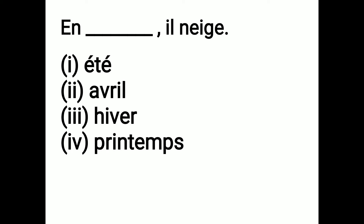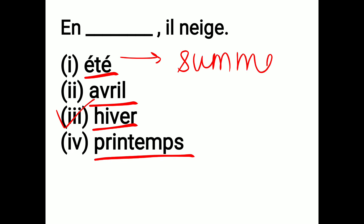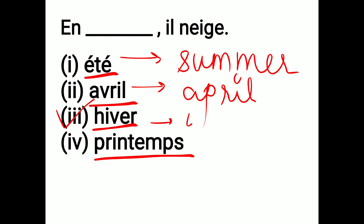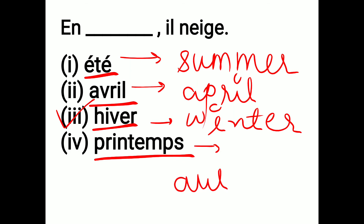Next: On dash il neige — that means, in dash, it snows. Options are été, avril, l'hiver, printemps. Your 5-second time begins now. The correct answer is l'hiver. Été is summer. Avril kya hota hai? April — April mein garmi hota hai. L'hiver is winter, and in winter it snows. Aur printemps — what is printemps? Printemps ka matlab humne pehle dekha tha — it is autumn.